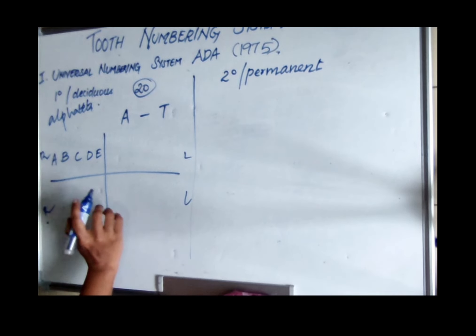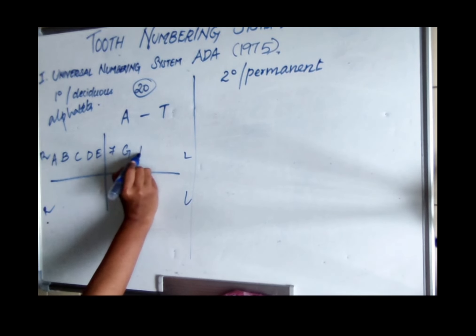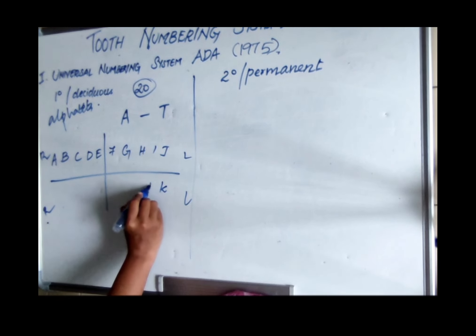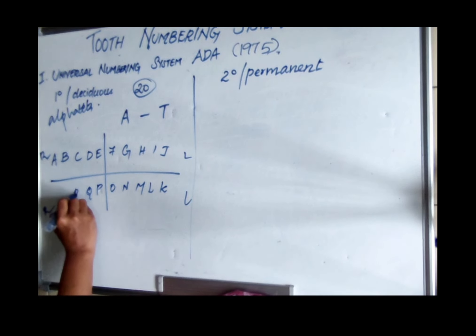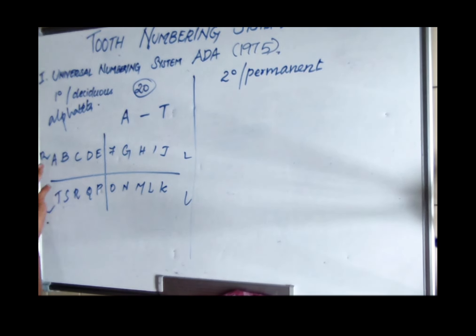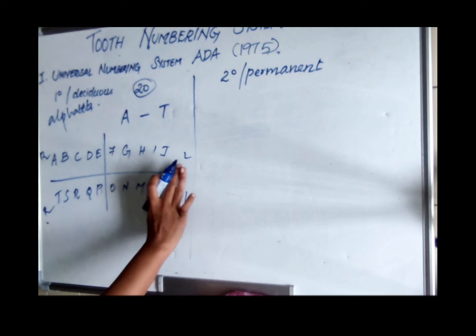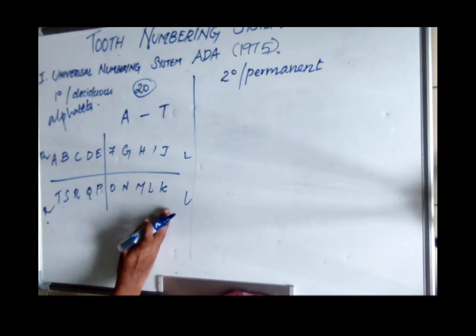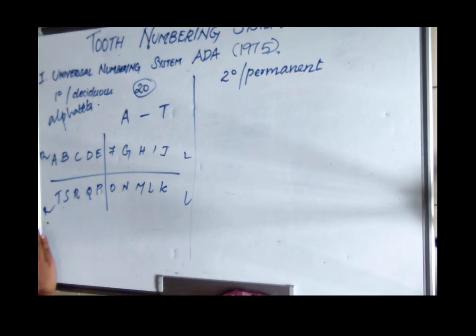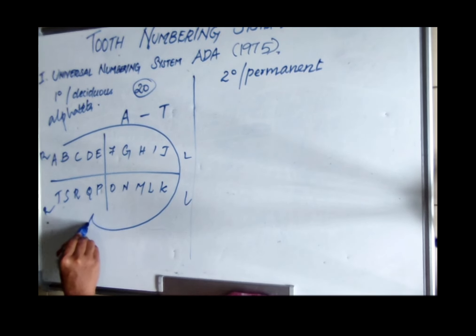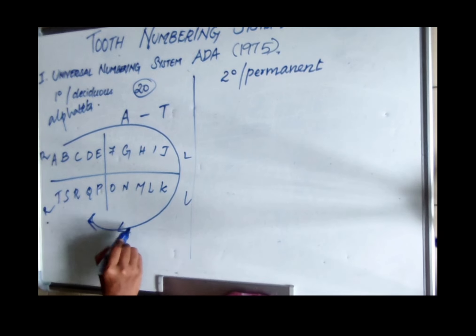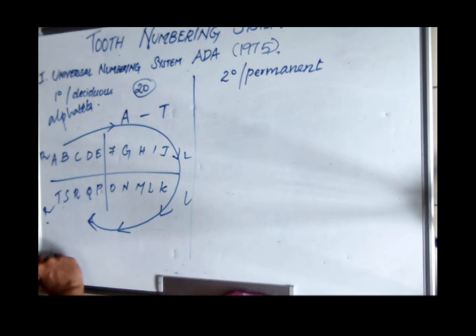Each quadrant has five teeth. The sequence continues F through J for the maxillary left, K through O for the mandibular left, and P through T for the mandibular right — following a clockwise direction starting from the maxillary right second molar, continuing to the maxillary left, then mandibular left, and ending at the mandibular right second molar.